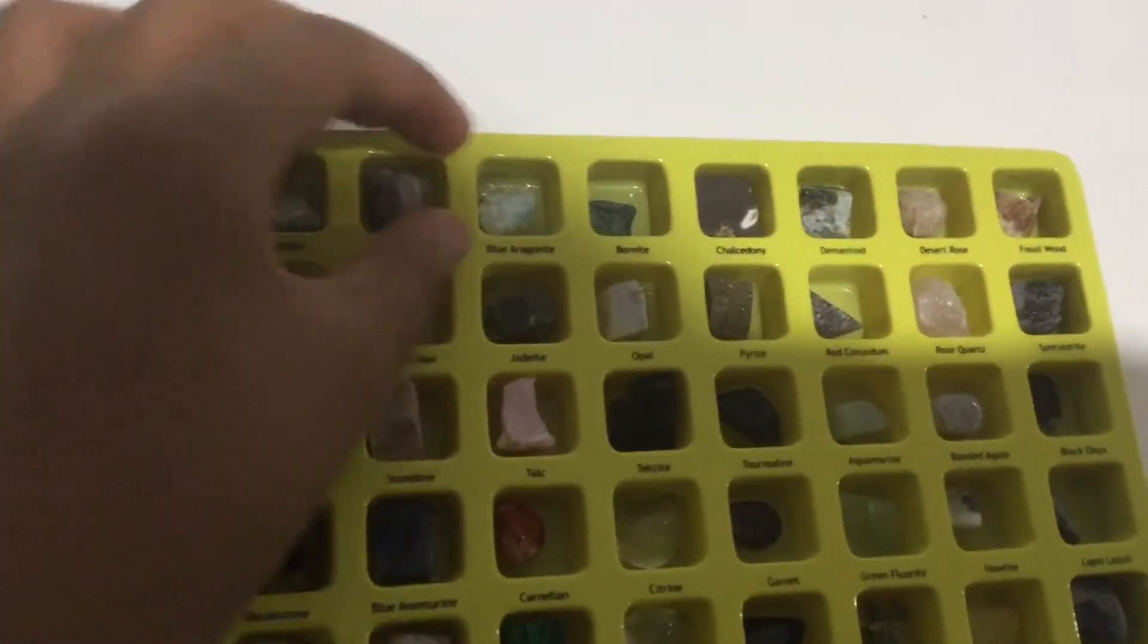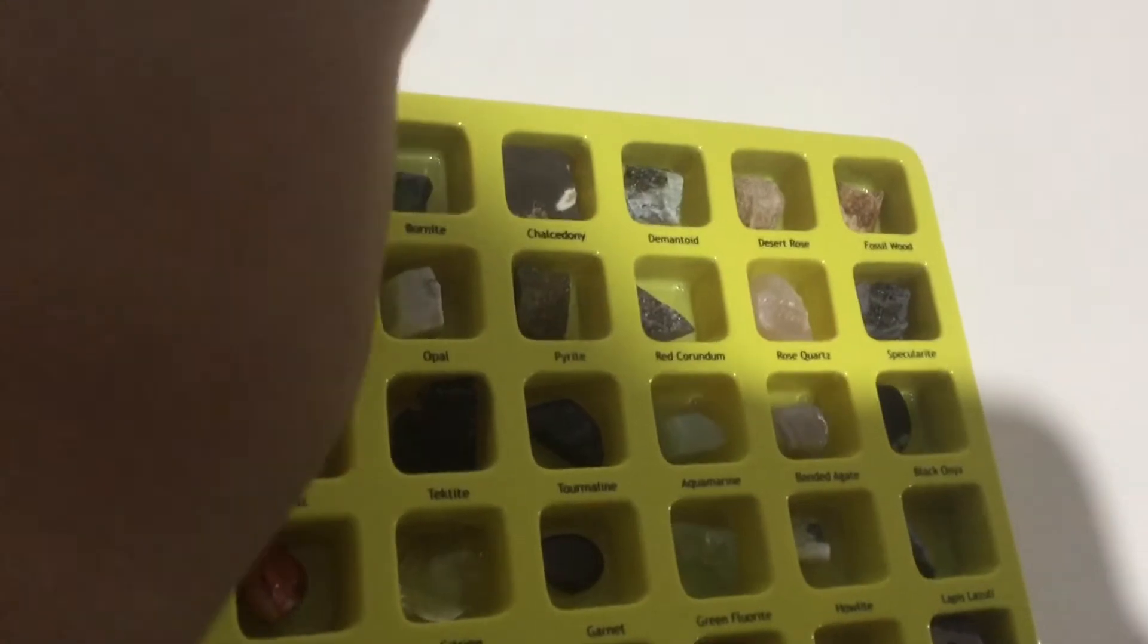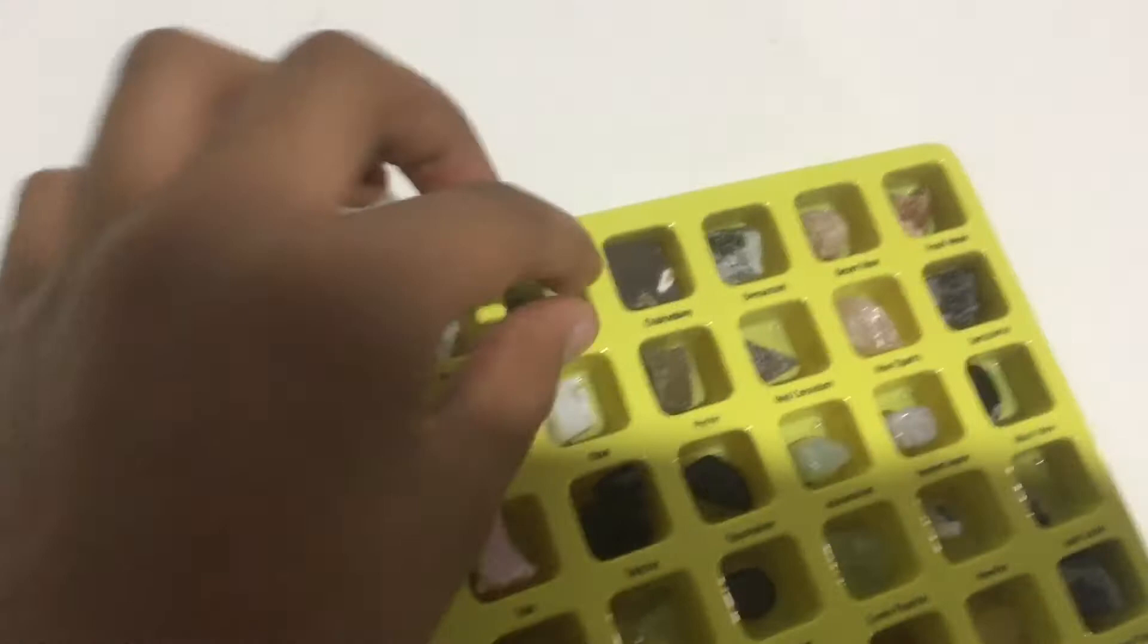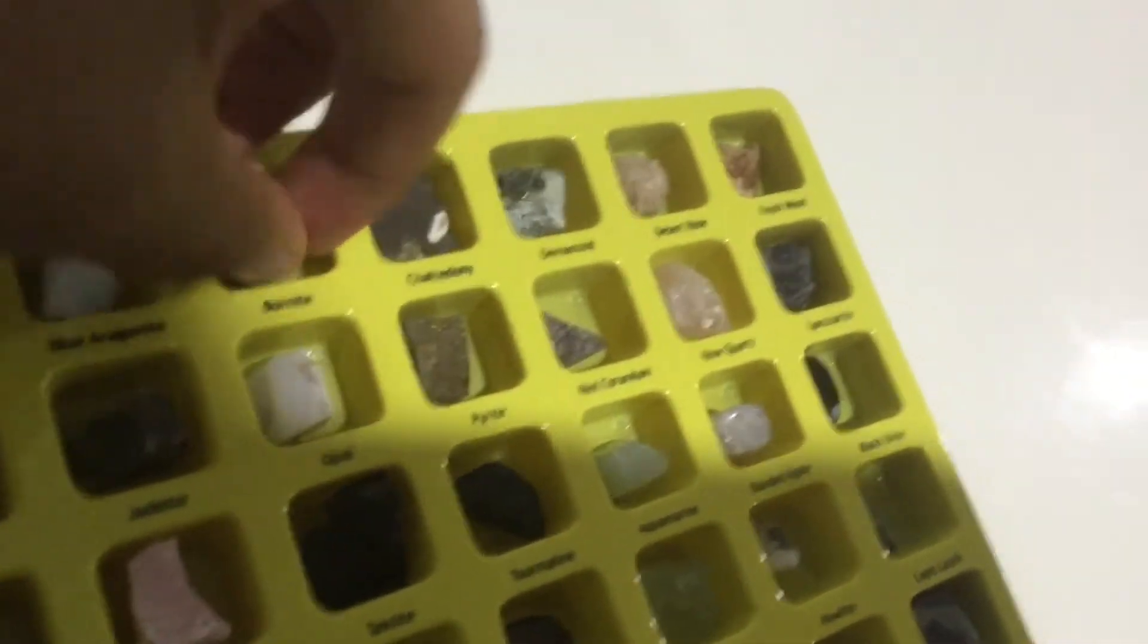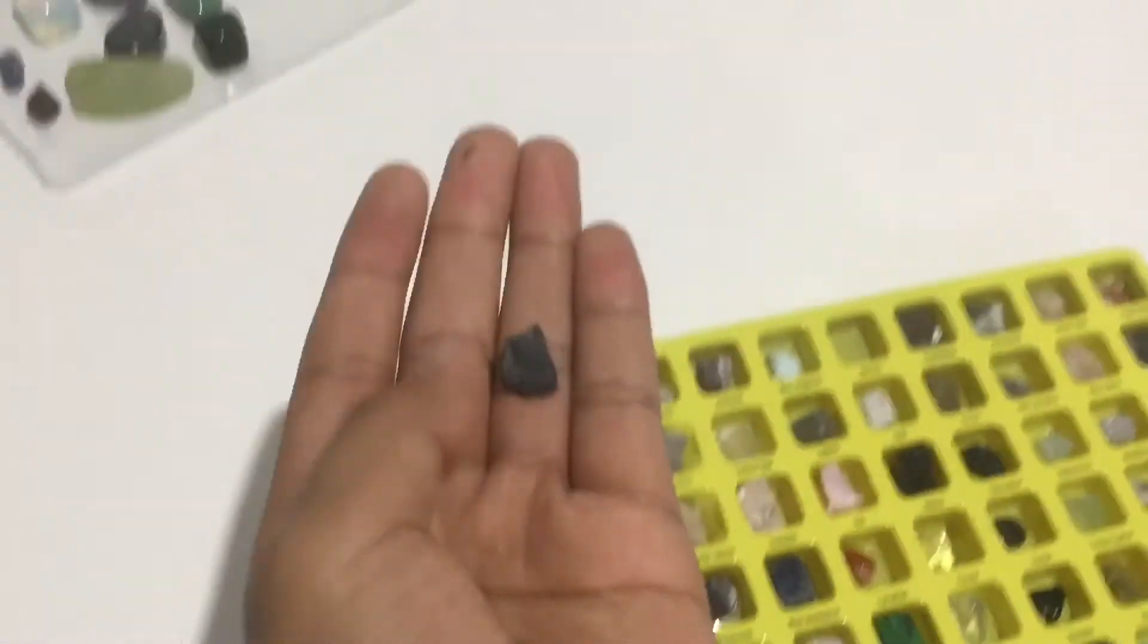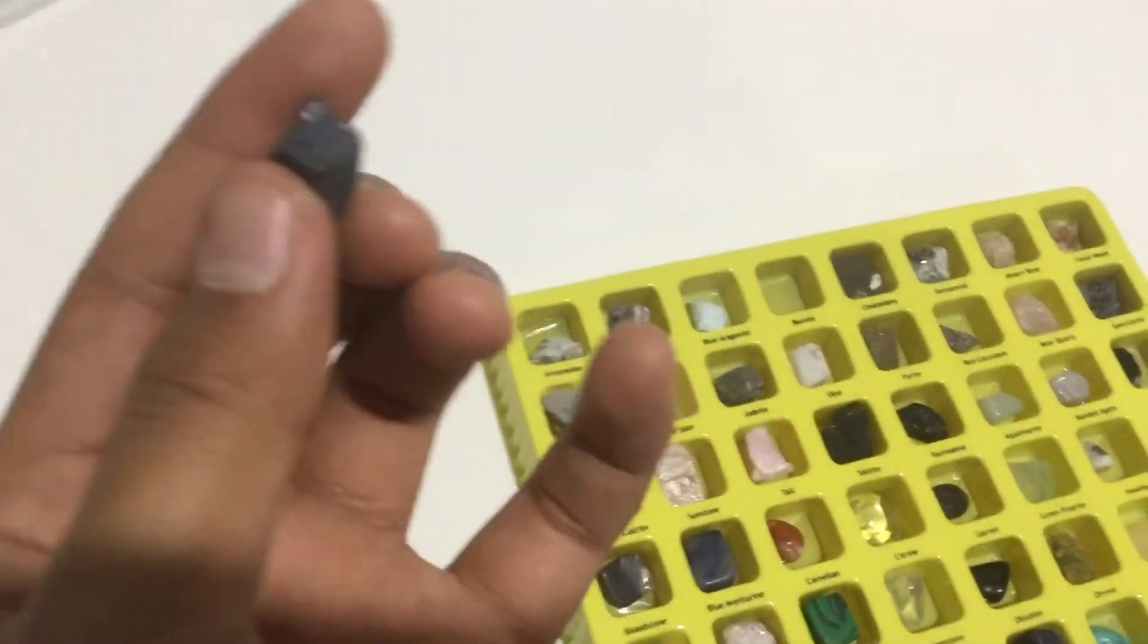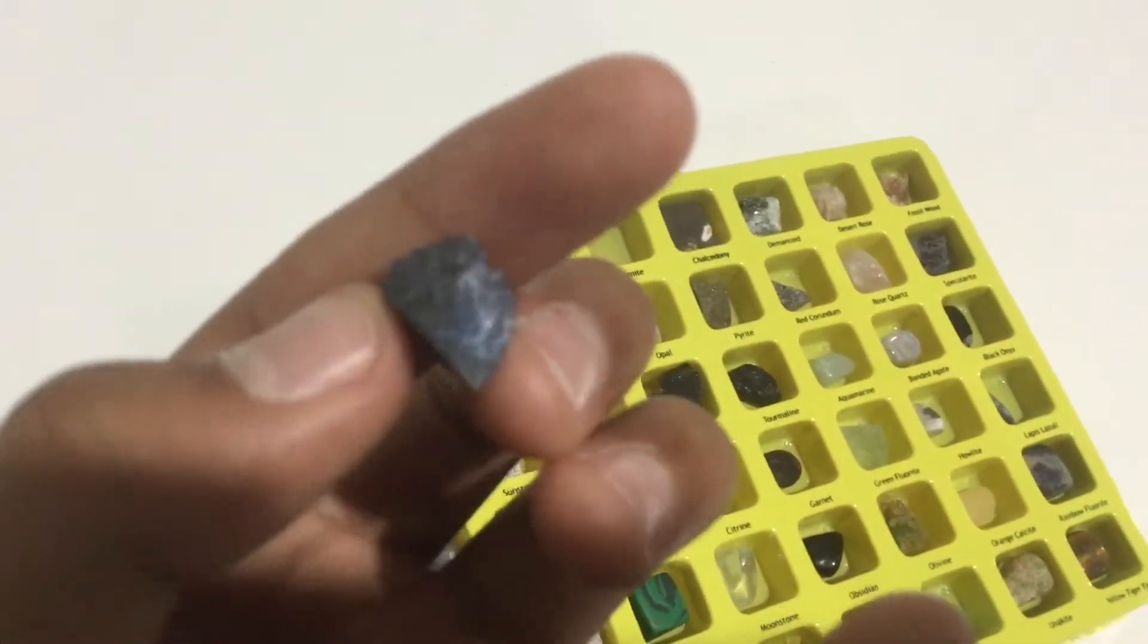Next one is blue dragonite. Next one is bornite. A fact about this one is underground when it has an exposed area, it's like a copperish brown reddish, and now that it's exposed to air it has like this blue and red and purple on it. That's really shiny.